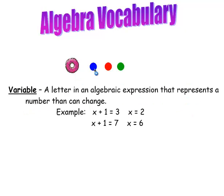Variable: it's a letter in an algebraic expression that represents a number that can change. Here's my first example: X plus 1 equals 3. In this case, the variable X has the value of 2. But if I change the numbers surrounding X and change it to X plus 1 equals 7, then the value of X changes to 6. The variable didn't change, but its value did.